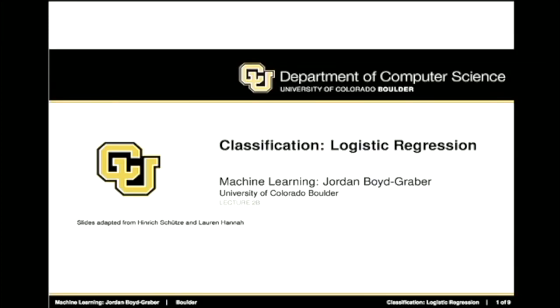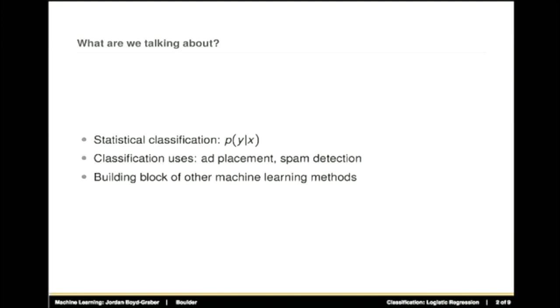We'll continue today's topic of supervised probabilistic classification. Now we're going to talk about logistic regression. Recall that we're trying to do statistical classification where we have some input data and we want to get a probability of what is the probability of each of our possible answers. You can use classification for deciding whether to stick an ad next to a search result or to detect whether an email is spam or not. You can also use classification in other settings, like determining whether a photo has a bird in it. This is a very common building block of machine learning methods, and that's why we're talking about it at the very beginning.